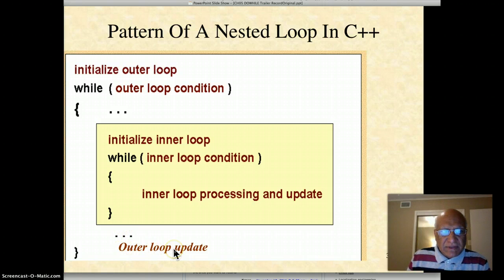Once the inner loop is exited, there may be more tasks, and somewhere there is an outer loop update. Don't forget that the inner loop requires its own initialization of the loop condition. Any other variable that will be changed here needs to be initialized also, because you want this yellow box to execute many times subject to this condition. So there may be variables that are being changed here that need to be initialized here also, not just the loop variable.